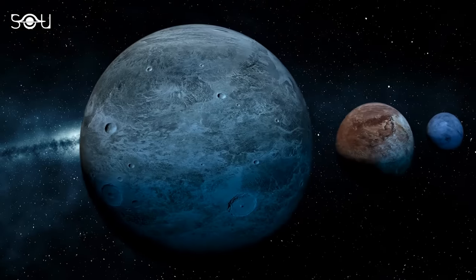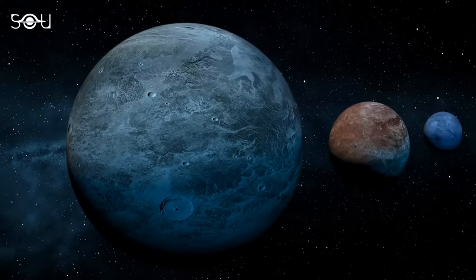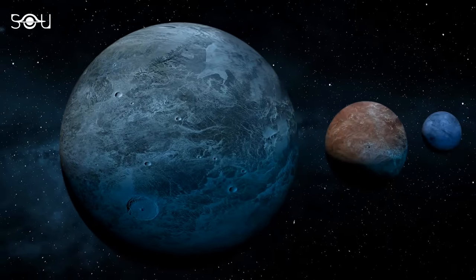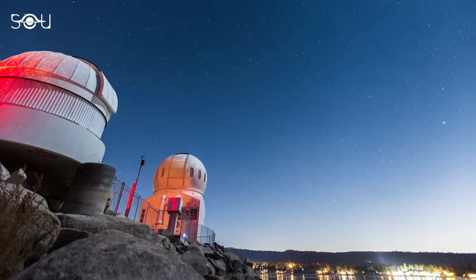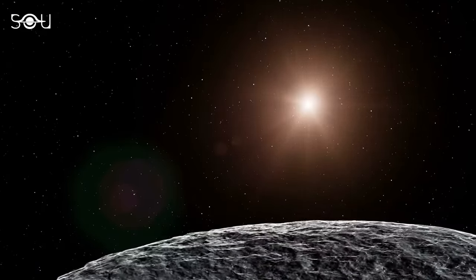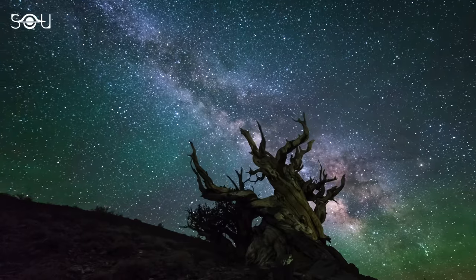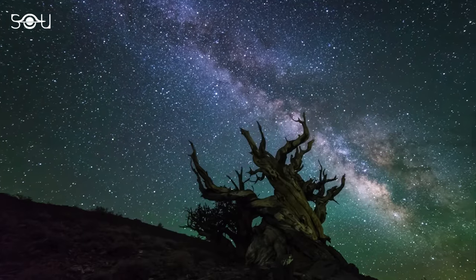The discovery of this exoplanet has solved another long-standing exoplanet mystery, the Radius Valley Puzzle. So how did astronomers discover this distant planet? What clues hint at the possibility of water ocean on its surface? Finally, and most importantly, why is the discovery of this exoplanet so critical to astronomy?